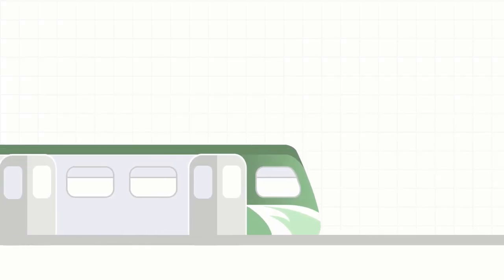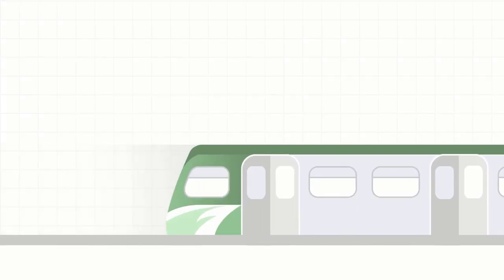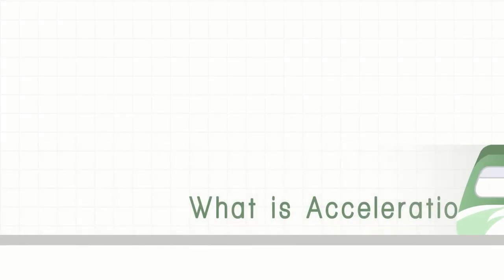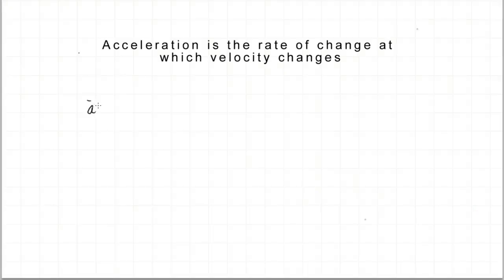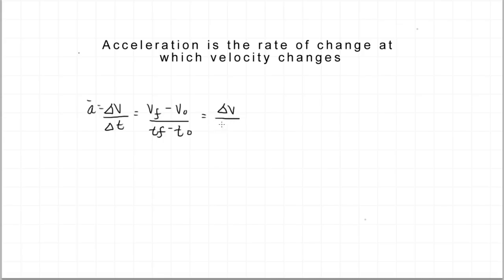Before we dive into the question, let's recap. What is acceleration? Acceleration is the rate of change at which velocity changes. A is equal to the final velocity minus the initial velocity over the final time minus the initial time. Note that in the textbook, they use the change in velocity over time since t₀ is equal to zero.